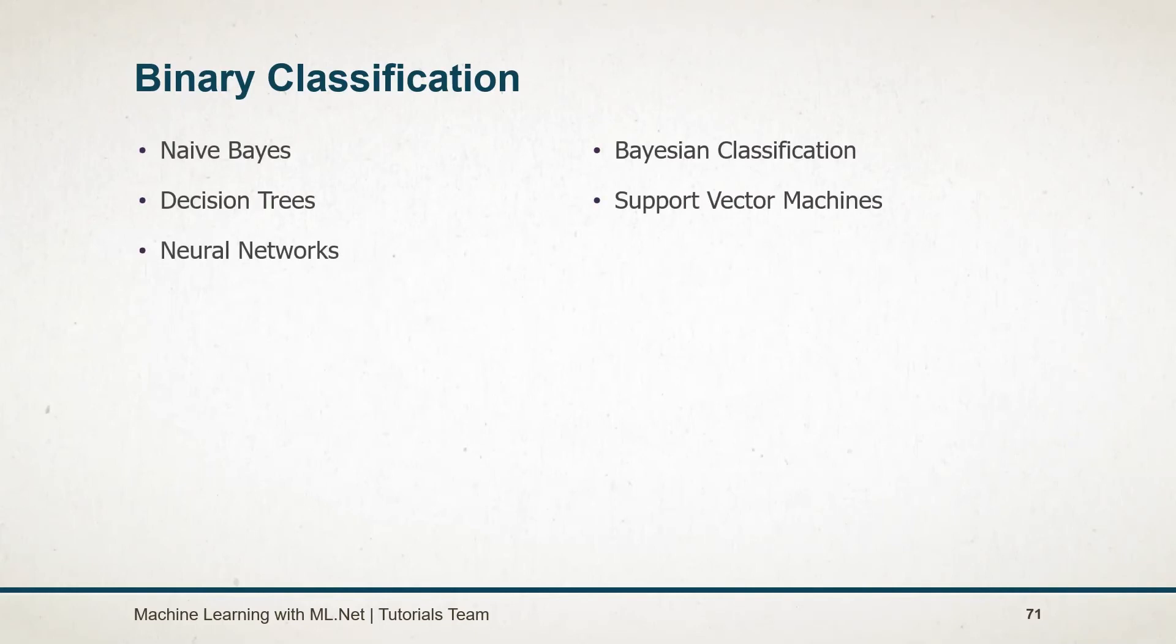There are various kinds of algorithms available for binary classification such as Naive Bayes, decision trees, neural networks, Bayesian classification, support vector machines, etc.